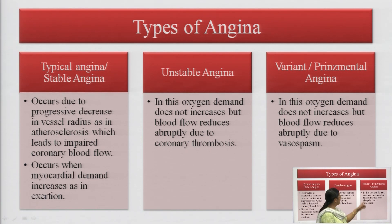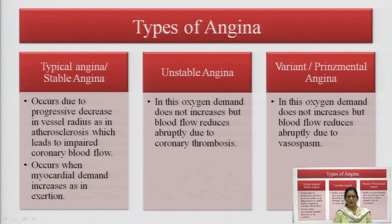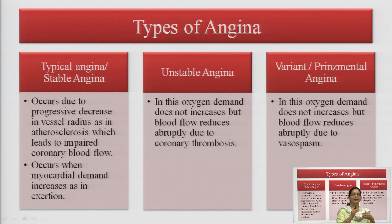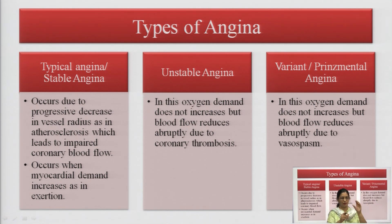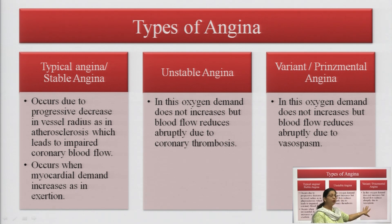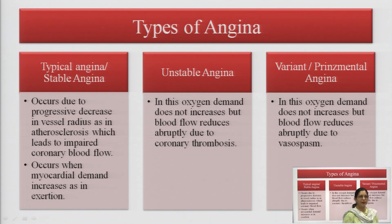The third type is variant or Prinzmetal angina. In this type, no atherosclerosis is present — there is no deposition of fat. Pain occurs due to reduced blood flow caused by abrupt vessel spasm. So in stable and unstable angina the problem is due to atherosclerosis, while in Prinzmetal angina oxygen demand does not increase, but blood flow reduces due to vessel spasm.